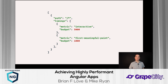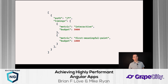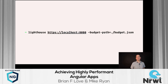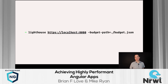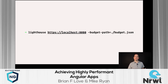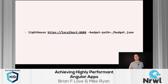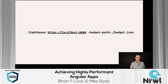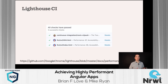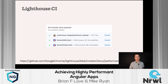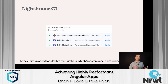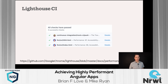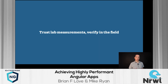You can also set up budgets around time to interactivity and first meaningful paint, and run this on the command line using Lighthouse, pointing it at your localhost and the path to your budget file. You can also run Lighthouse in CI, which is a great way to measure and monitor performance so you don't have regressions. Next, Mike will talk about how we can trust lab measurements but also need to verify those in the field.